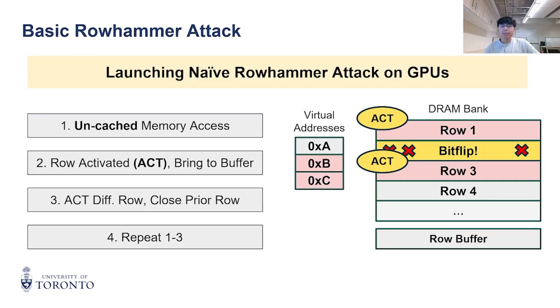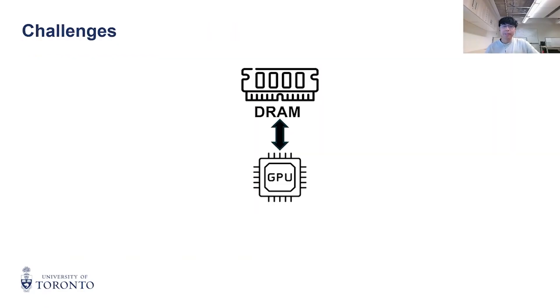By repeating this process, we can trigger ACTs rapidly, leading to bit flips in neighboring victim rows. That doesn't sound very difficult, but there are several big hurdles we need to overcome.